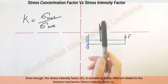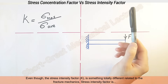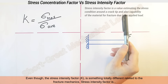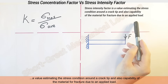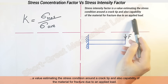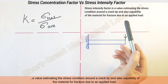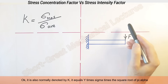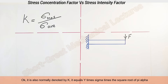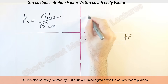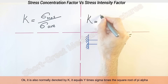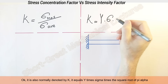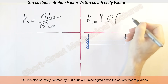Even though the stress intensity factor is something totally different, related to fracture mechanics. Stress intensity factor is a value estimating the stress condition around a crack tip and also the capability of the material for fracture due to an applied load. It's also normally denoted by K, and it equals Y times sigma times the square root of pi times alpha.